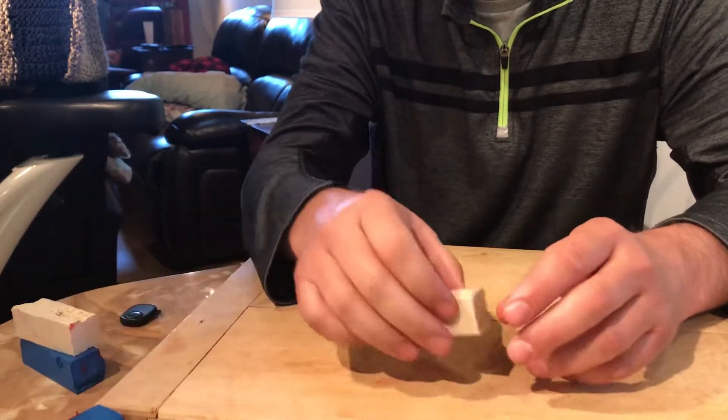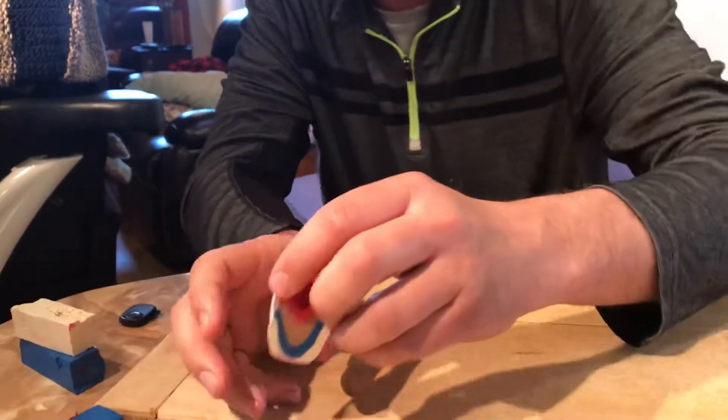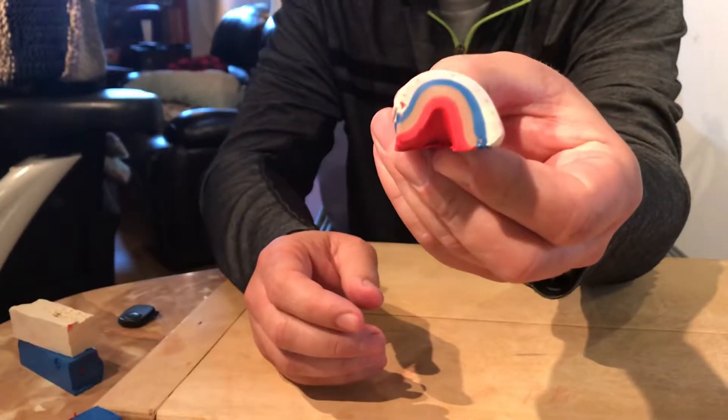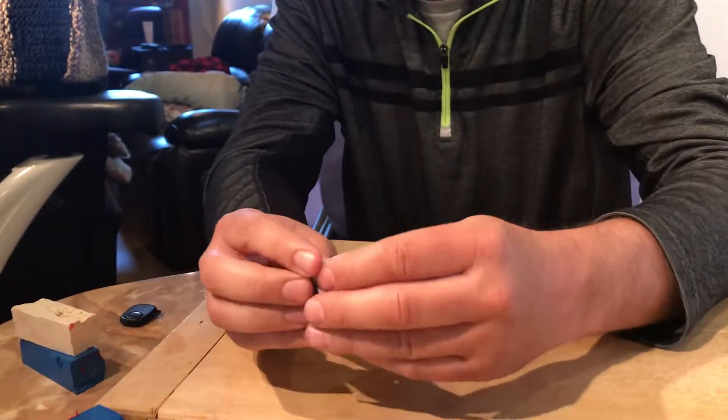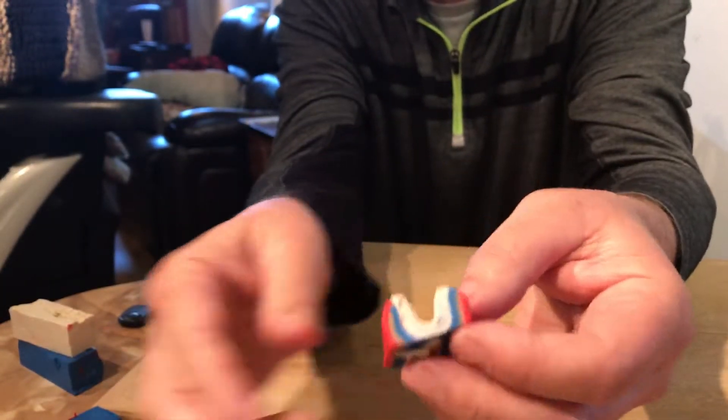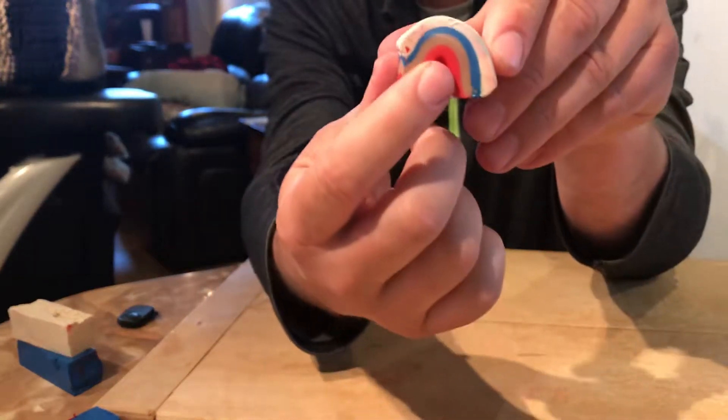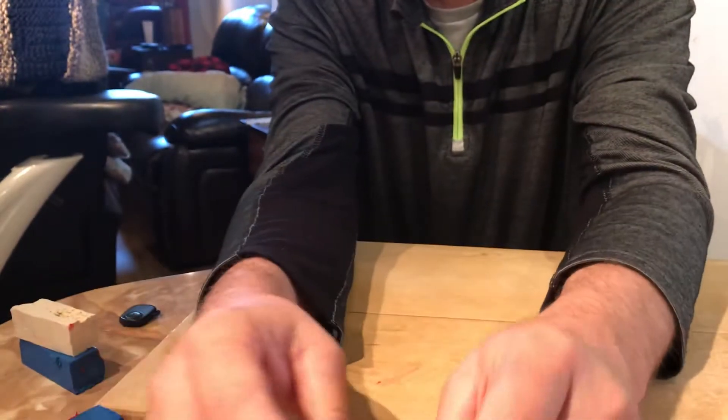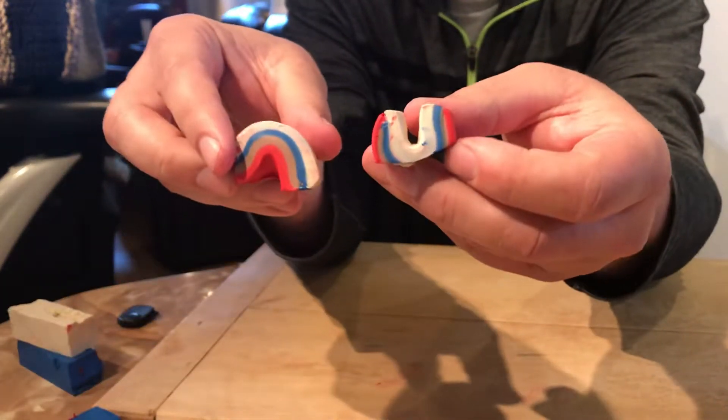You guys know what anticlines and synclines are already. An anticline looks like that, and a syncline is just the opposite. In the case of an anticline, the oldest stuff is in the middle. In a syncline, the youngest stuff is in the middle.